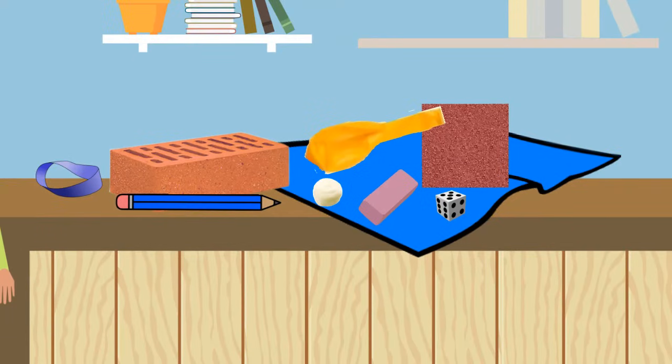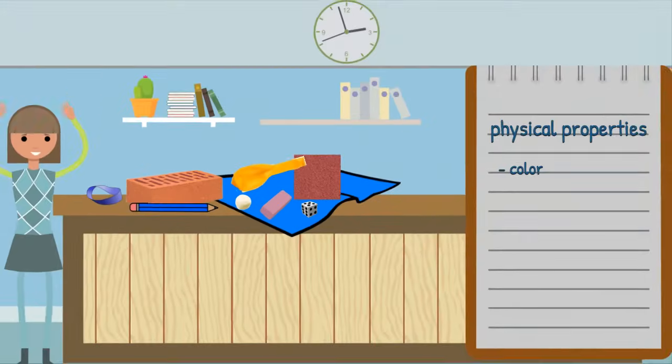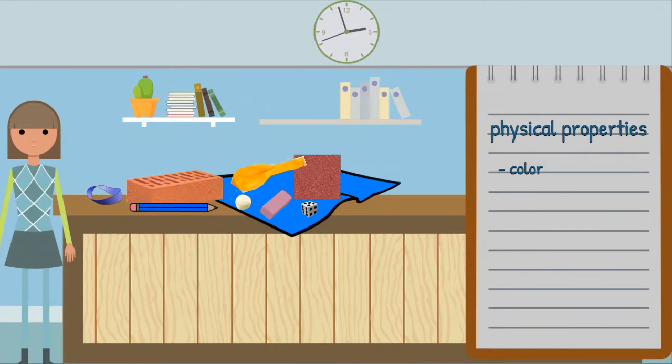Let's start by looking at these objects' colors. Which color do you see the most of? That's right! There are more blue objects than any other color. Color is a physical property we can see or observe.